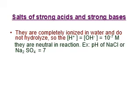Sodium chloride is a salt of a strong acid and strong base — it is produced from the reaction of sodium hydroxide, a strong base, with HCl, a strong acid. Similarly, sodium sulfate is produced from the reaction of sodium hydroxide with sulfuric acid, also a strong acid.